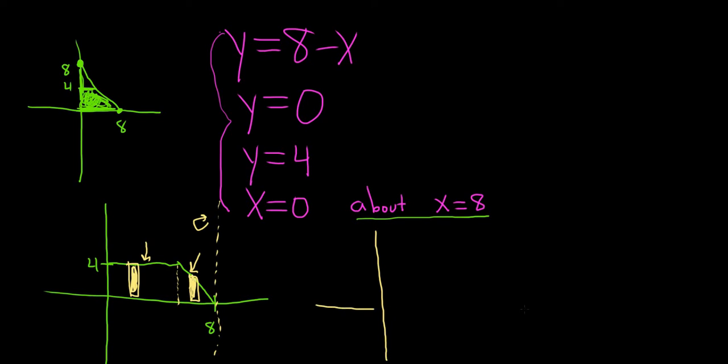So here's the y-axis, here's the x-axis, here's 8, and then here's 4. Let's come this way and then I'll come down like this. And then we're spinning it about the line x equals 8. So we're going to spin it right here. And let's draw our horizontal rectangle.